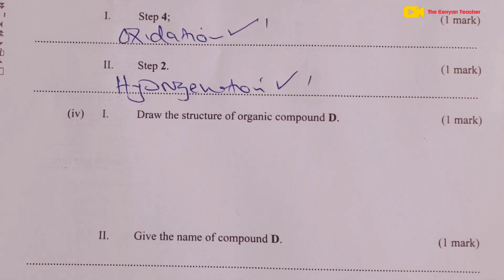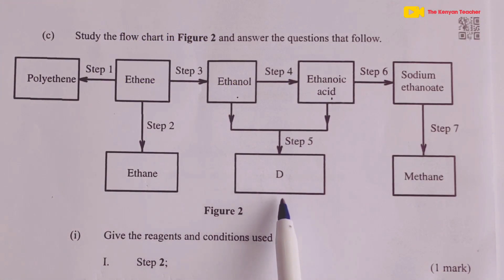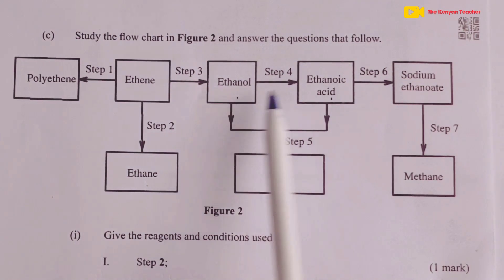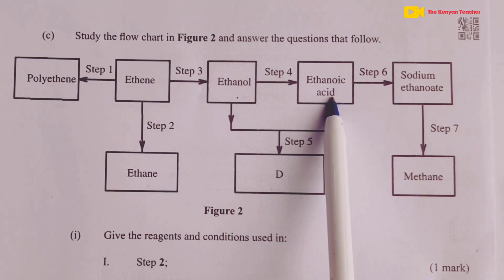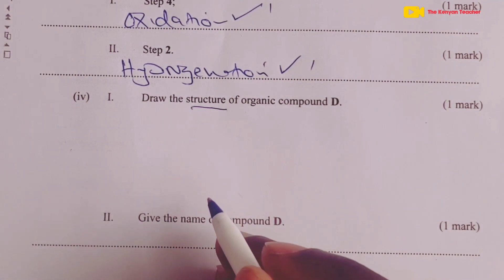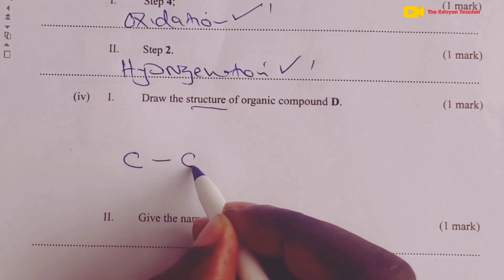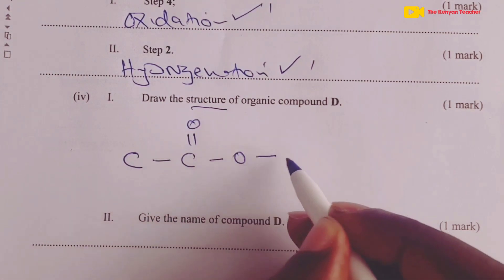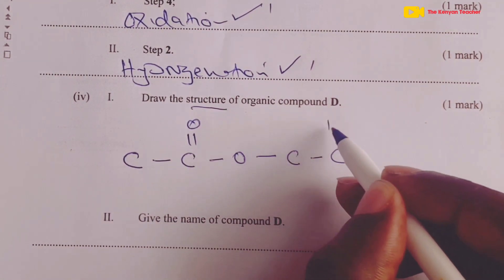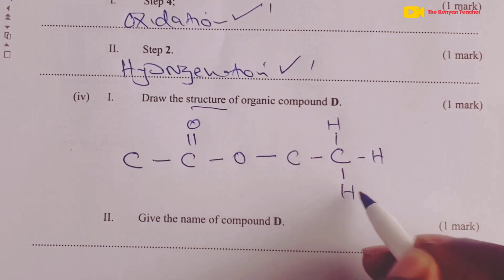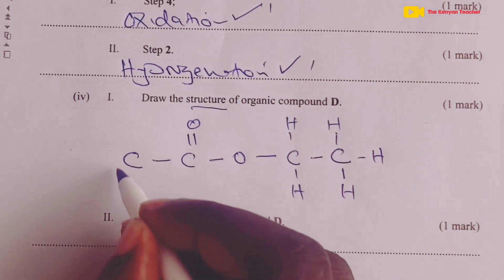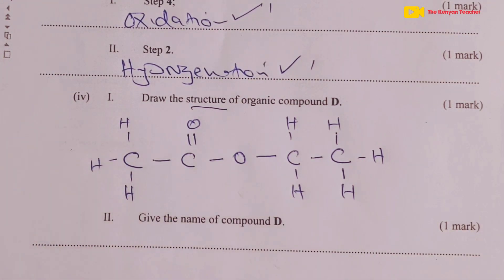The next question asked us to draw the structure of D. D is the ester that is formed when ethanol is reacted with ethanoic acid, so it is actually ethyl ethanoate. This would be the structure of ethyl ethanoate. Because we are told to draw the structure, we didn't accept the condensed form.